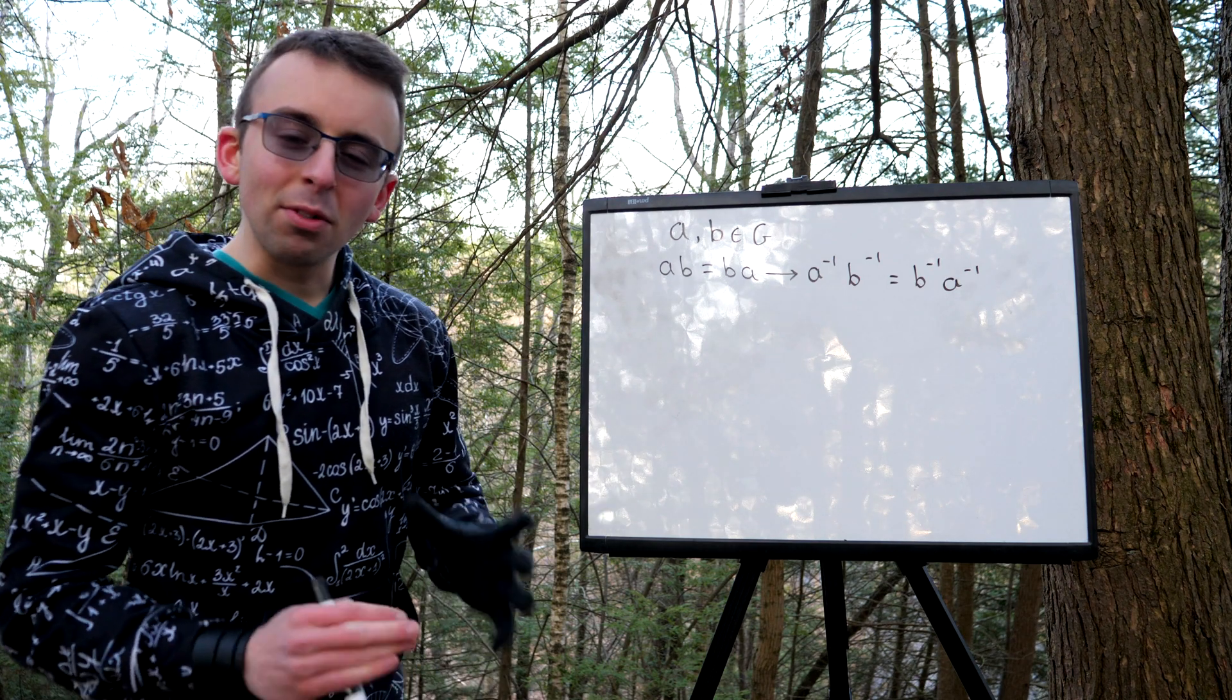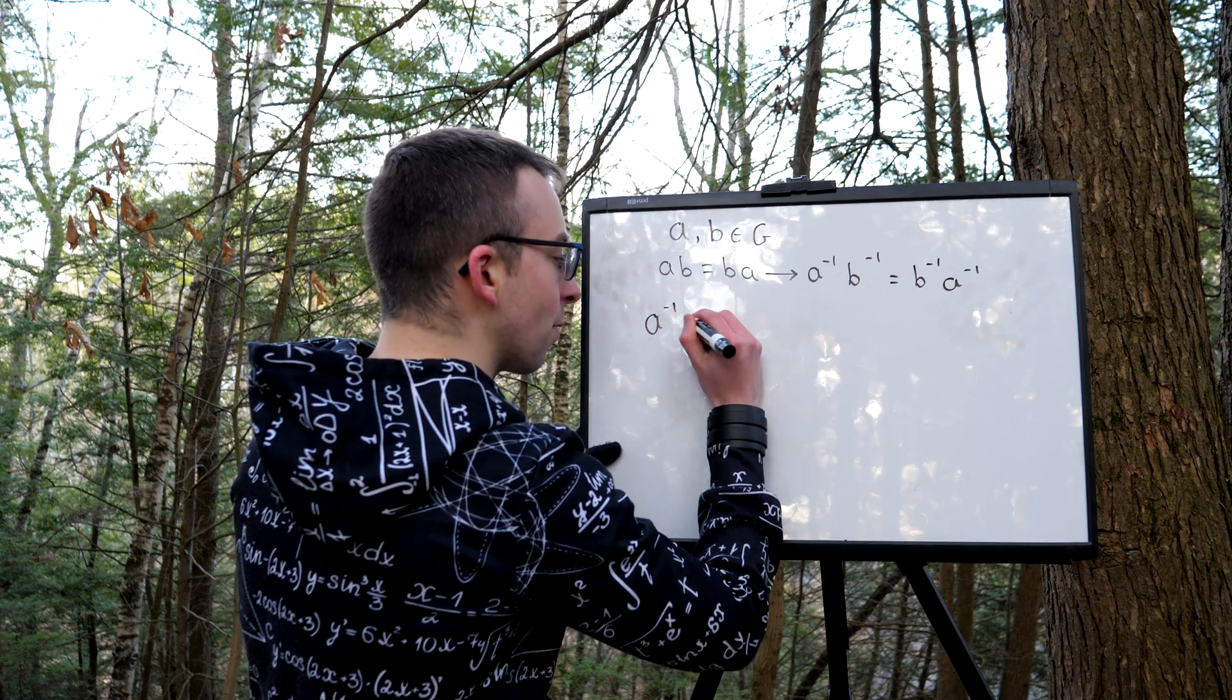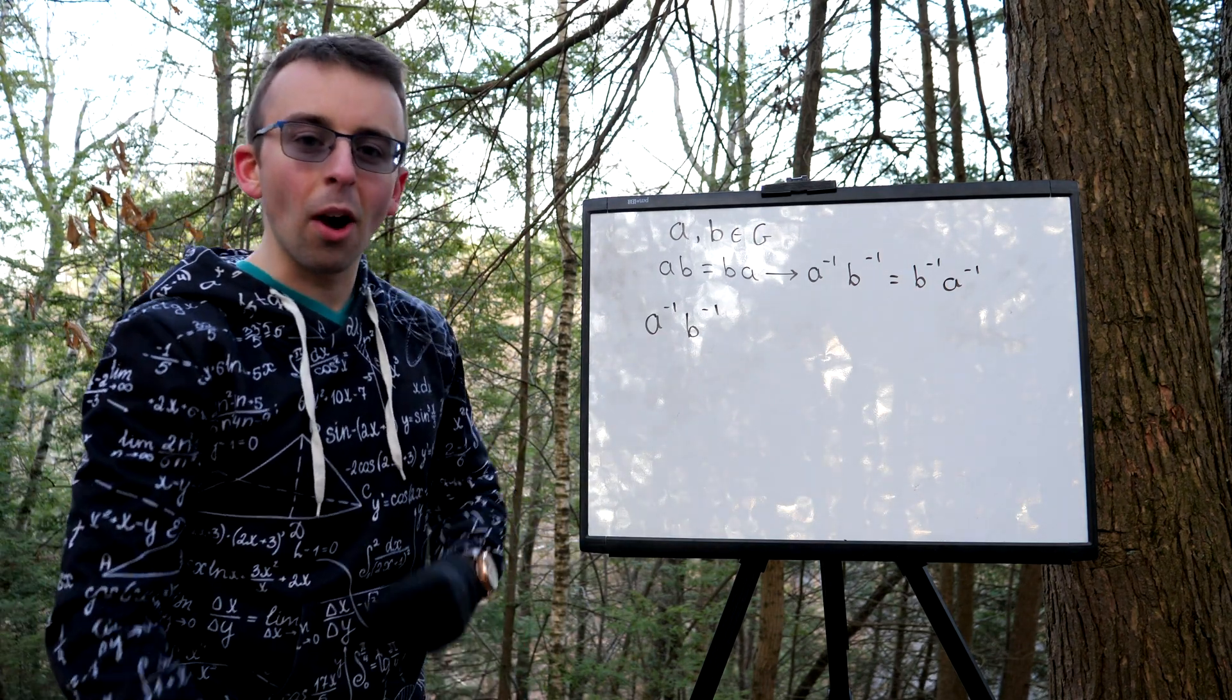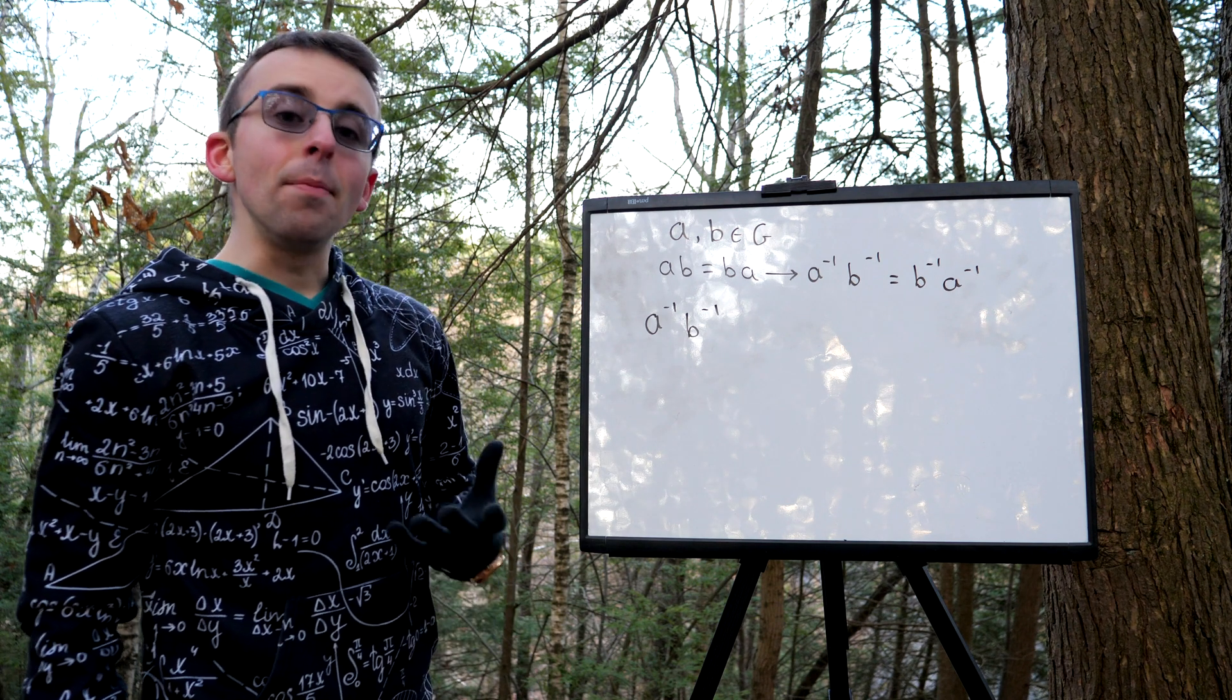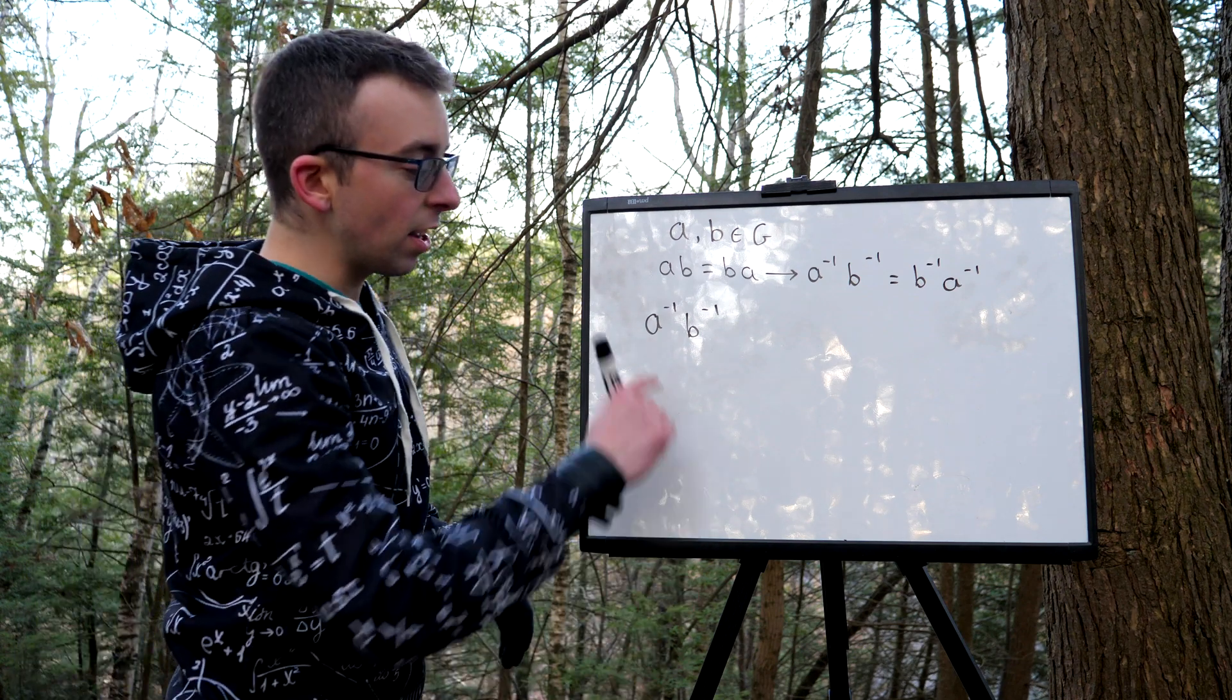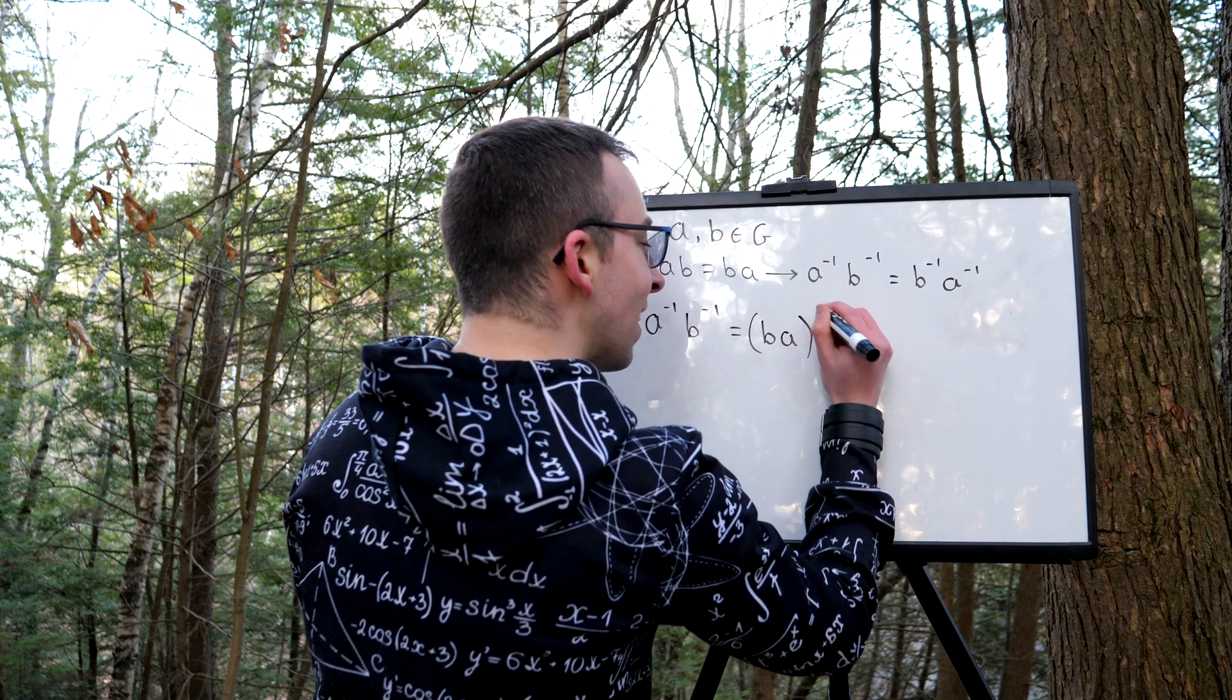This is one of those nice, easy proofs that we can actually start here on the left, so consider a inverse b inverse, and then write a few equalities to work our way to where we want to get to, which is always nice and slick. What do we know a inverse b inverse is equal to? Well, in a previous lesson, which I'll leave a link to in the description, we proved that a inverse b inverse is equal to ba inverse.